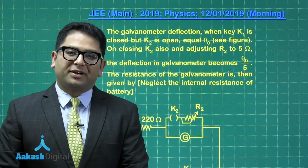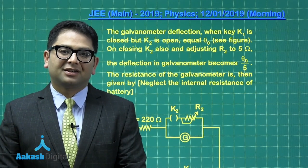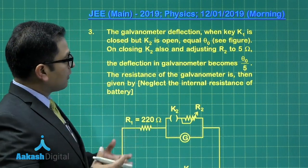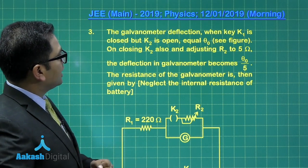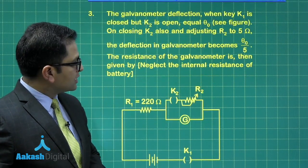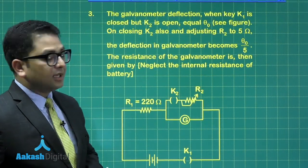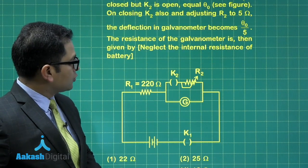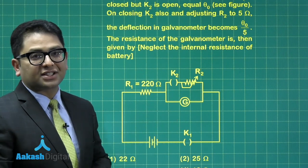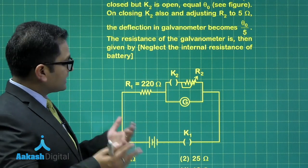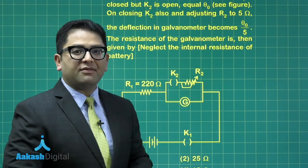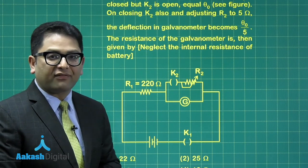Question number three, experimental physics. Of course, it has been brought from the topic current electricity but related to galvanometer. It says the galvanometer deflection when K1 is closed and K2 is open is θ₀. Let me show where is K1 and K2. So K1 closed, K2 open, the galvanometer deflection is θ₀. And next time, K2 closed, K1 also closed, R2 made 5Ω, the galvanometer deflection becomes θ₀ by 5.